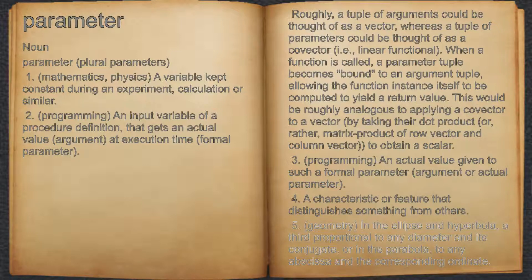5. Geometry, in the ellipse and hyperbola, a third proportional to any diameter and its conjugate, or in the parabola, to any abscissa and the corresponding ordinate.